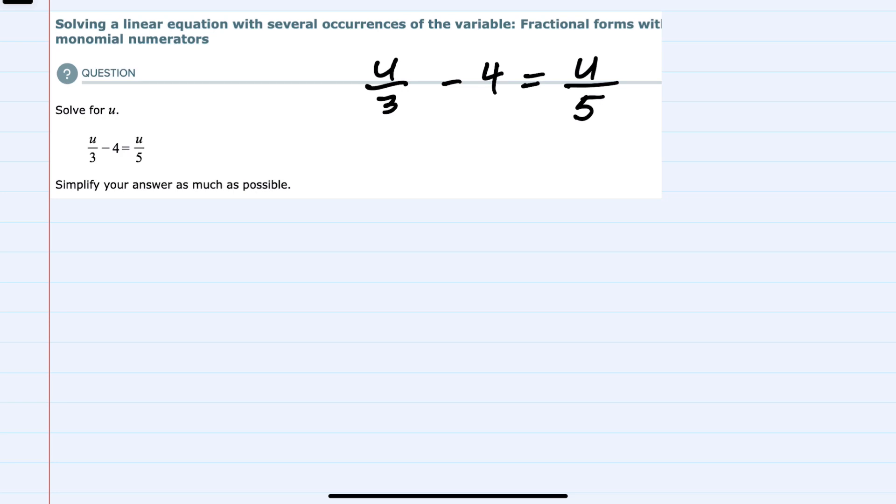If we were trying to add these together, we would get a common denominator of 15. But instead of adding, I want to take that 15 and multiply both sides of the equation by that value. So multiply the left side by 15. I can do that as long as I also multiply the right side by 15.